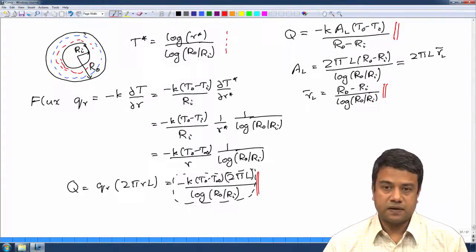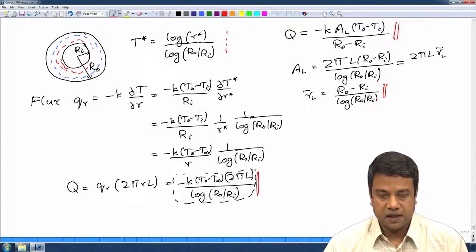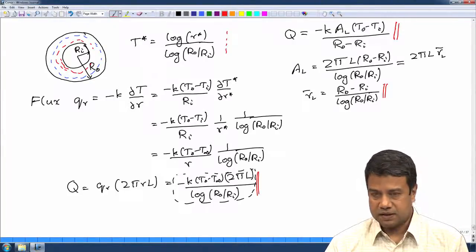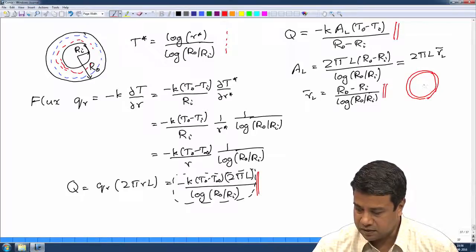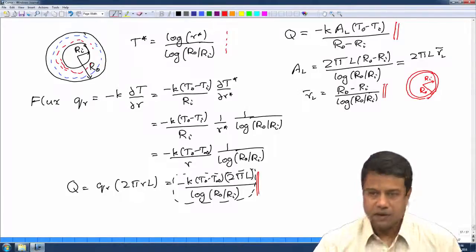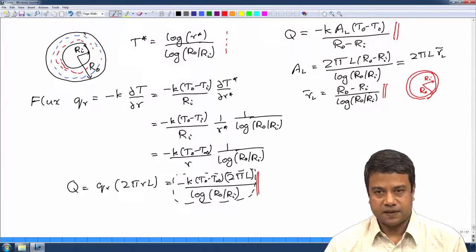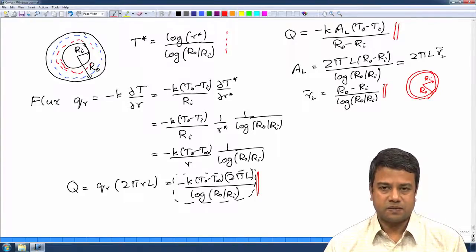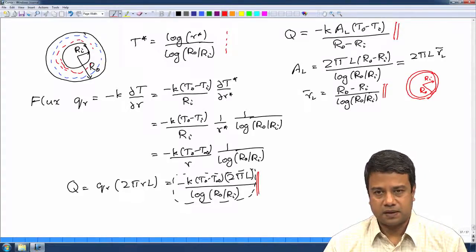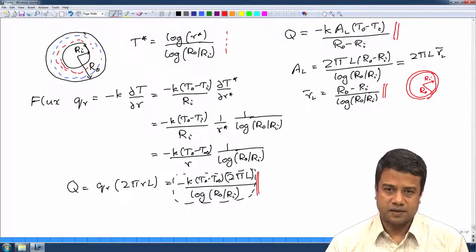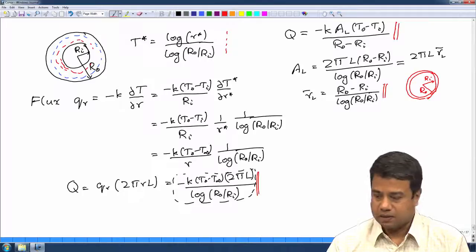As the wall thickness becomes much smaller than either the inner or outer radius — meaning the pipe is very thin — this expression reduces to the one for a flat surface. When r_0 minus r_i is much smaller than r_0 or r_i, you can take the limit as r_0 approaches r_i, and you get back the expression for heat transfer across a flat surface. So this was a simple one-dimensional heat conduction problem.